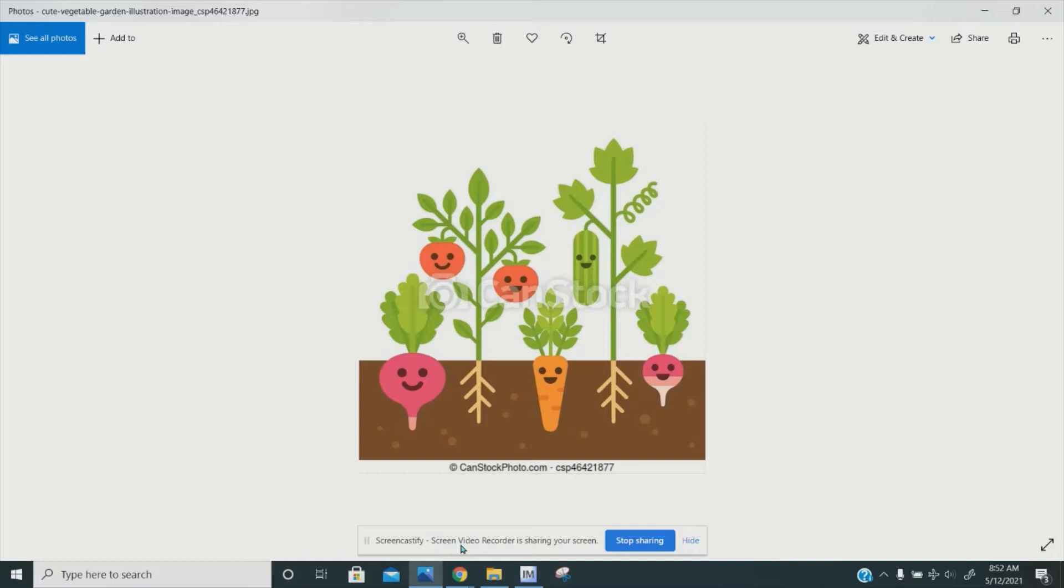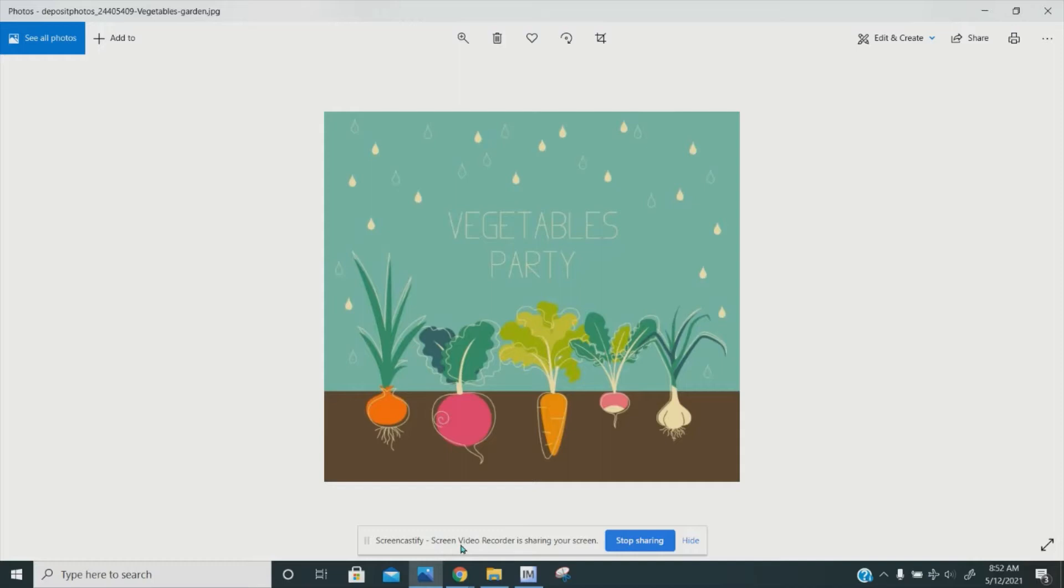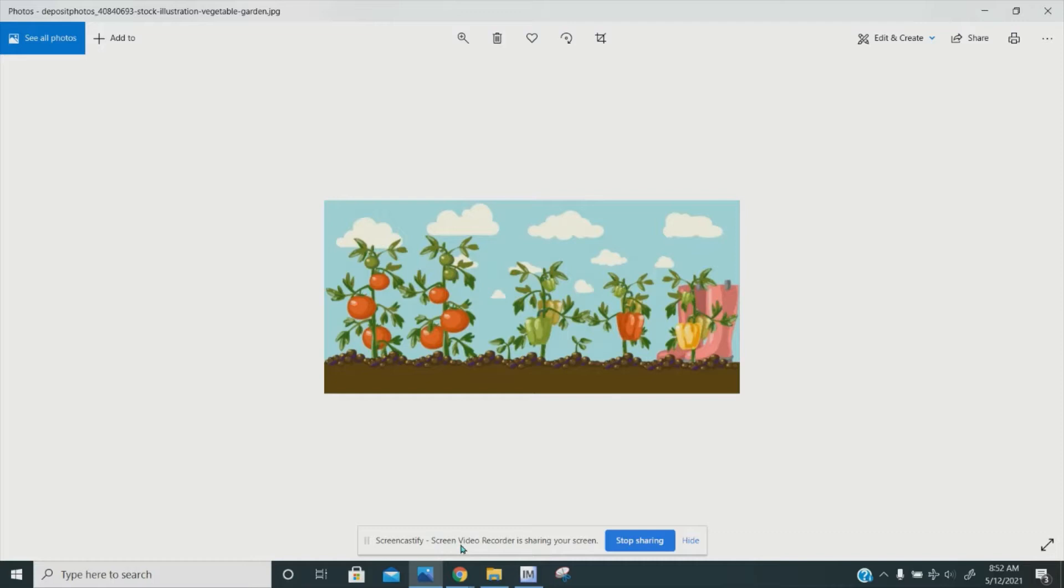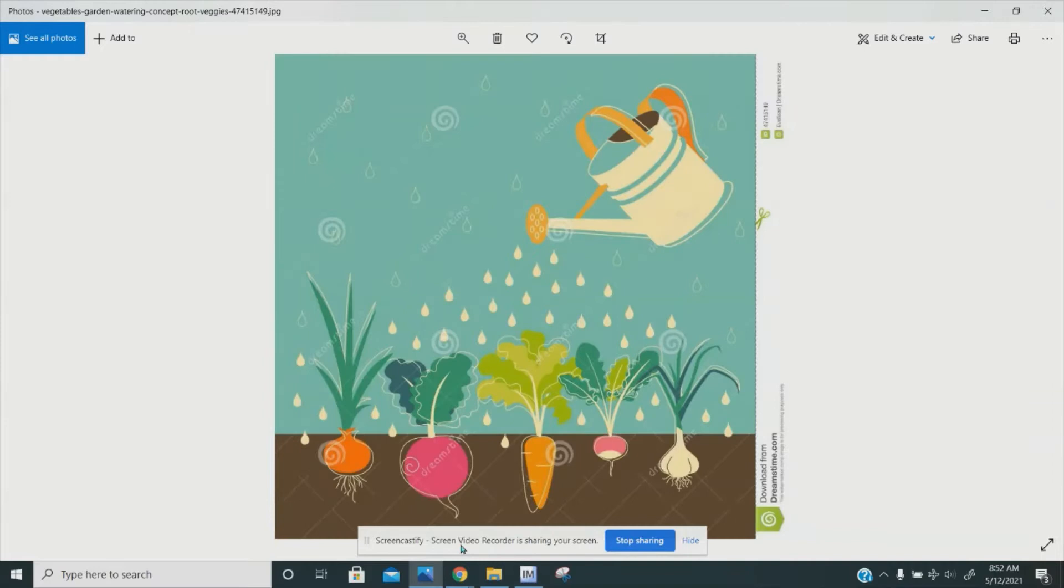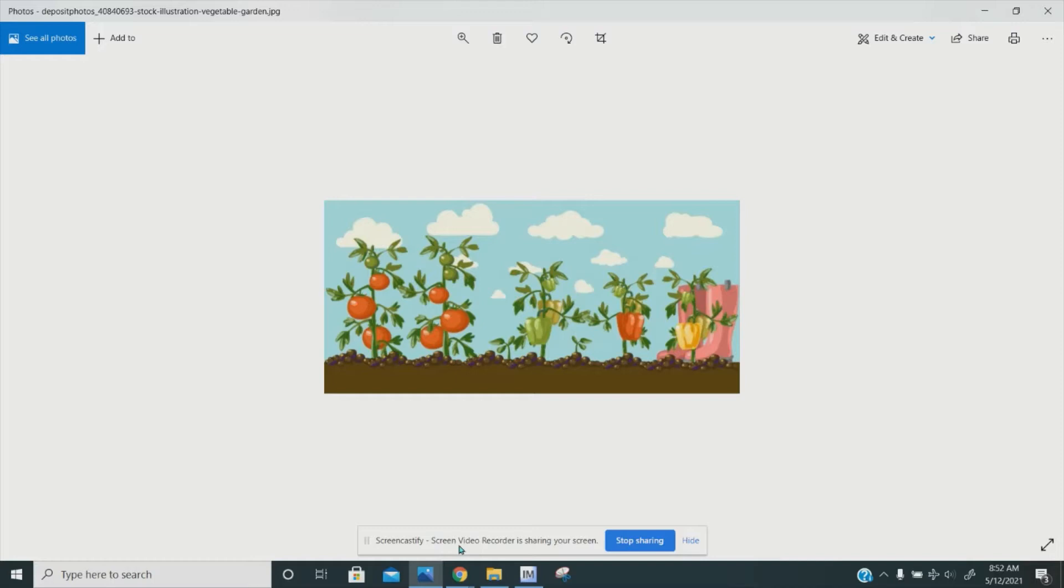So these images that I found online were very helpful in coming up with my plan. The line that divides the sky from the dirt is what I'm going to use to help me know what's above and below. I have to put in the roots and I have to put in the vegetables that live below the dirt, but I also have to put things above like the leaves and sometimes the vegetable itself like the tomatoes or the peppers like you see in this picture.